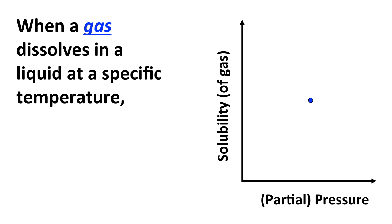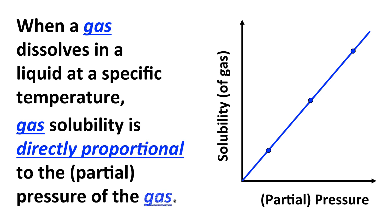For example, with oxygen, at a particular pressure of oxygen we get a particular solubility. If the pressure of oxygen is increased, we find that more gas dissolves — we get a higher solubility. If the pressure is decreased, we have less dissolved gas and a lower solubility. It turns out that for gases, gas solubility is directly proportional to the partial pressure of the gas.